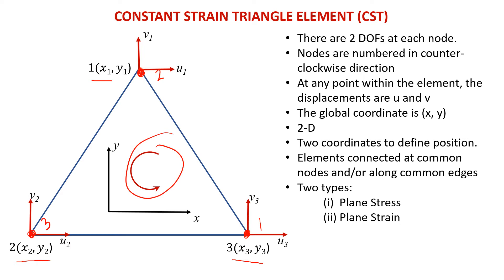Besides that, at each node there are 2 degrees of freedom, which is the displacement in X as well as the displacement in Y, denoted by U and V. For example, at node 1 we have U1 and V1; at node 2 we have U2, V2; and at node 3, U3 and V3. In this CST element, there are 2 types: plane stress and plane strain, which we will discuss in the next slide.